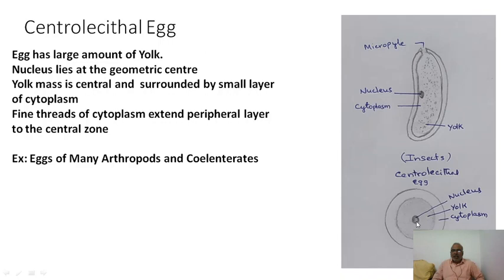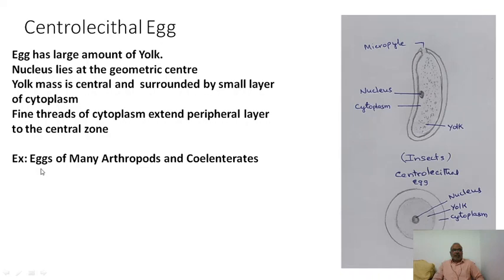Centrolecithal eggs are a very interesting variety in which the nucleus is situated in the center, surrounded by yolk, with cytoplasm forming the outer layer. Fine threads extend from the peripheral layer to the central zone, supporting and fixing the position of the yolk. These eggs have a large amount of yolk (polylecithal) and are found in many arthropods, especially insects.